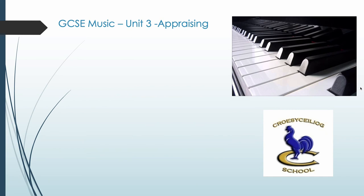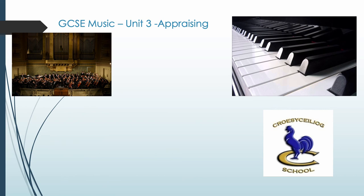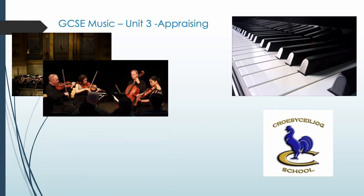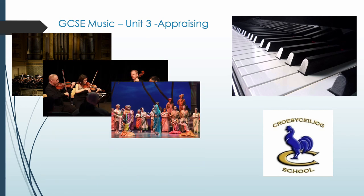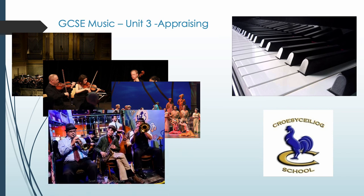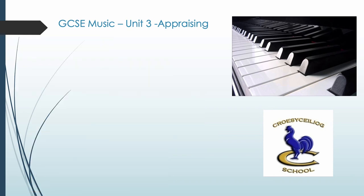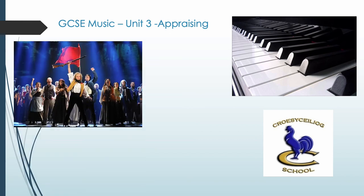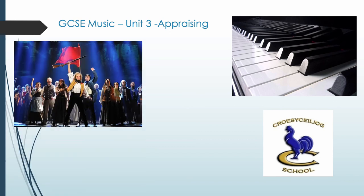Unit 3 is the appraising element of the course. The unit looks at 4 areas of study and between them will look at loads of different styles of music from the last 400 years. You will have the opportunity to learn about how music is put together and where Western music started. You will look at different groups of musicians and the features and terms that describe them, as well as more modern styles of music like musical theatre and jazz.